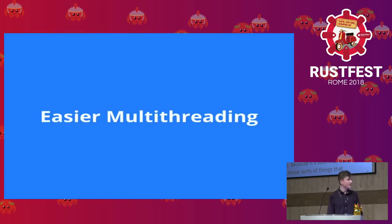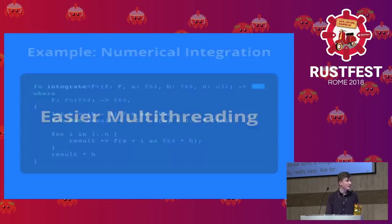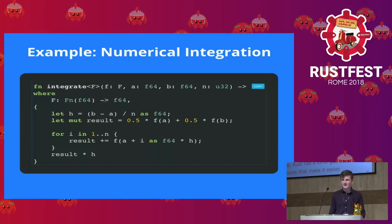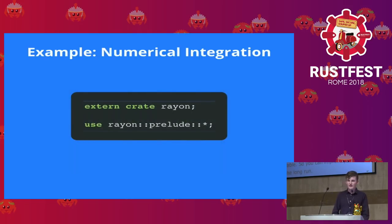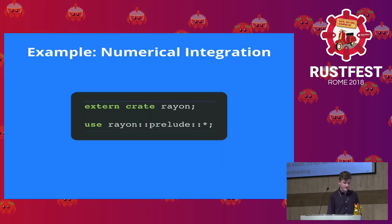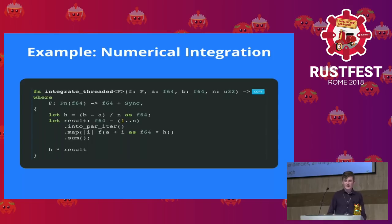Let's look at multi-threading. If I want to implement numerical integration — a simplified version where we're just calculating the area under a function — it mainly comes down to a loop where we're summing things up. This is exactly the type of thing you might want to parallelize. With Rust, tools like the Rayon crate make that really easy. You put it in your cargo.toml, import it, rewrite your function, and it works. It's readable, with not much extra complexity.